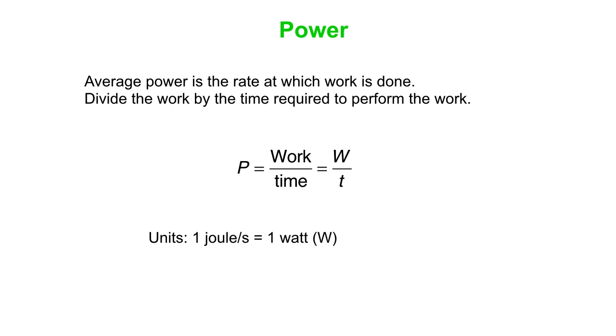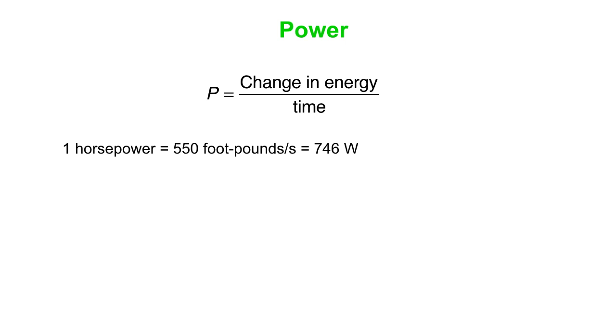You've got to be a little careful there with the W standing for work, because the W also stands for the unit of power, which is the watt. So one watt is one joule per second. Power is change in energy divided by the time interval.